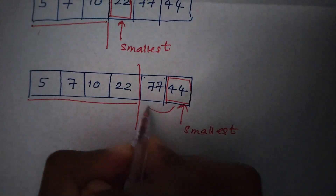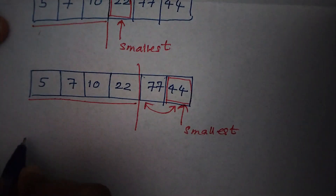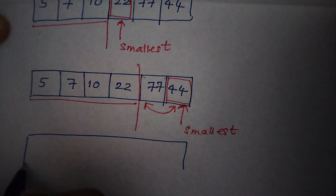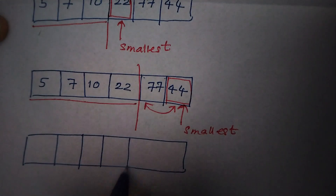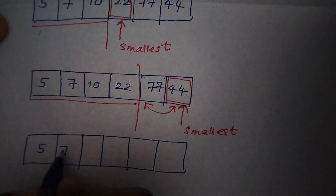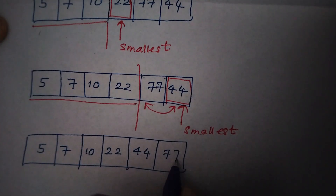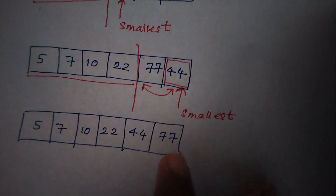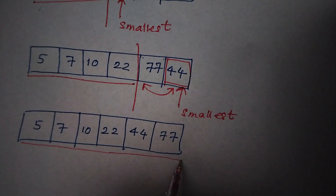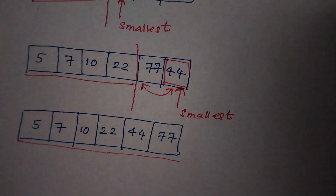Now at the end the array is sorted. There are five passes in this selection sort — in bubble sort also I explained the number of passes. There are six elements in this example, so the number of passes will be five. The number of passes should always be equal to the number of elements in the array minus one.